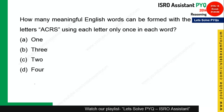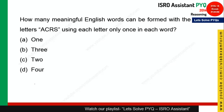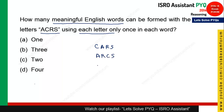I request all students present here as well as those watching online to try to give the answer — your time has already started. Time's up. The question says: how many meaningful words can be formed using the letters A, C, R, S, using each letter once in each word? The first meaningful word is CARS, the second is ARCS, and the third is CAR. So these are three words that can be formed. Option B is the correct answer.